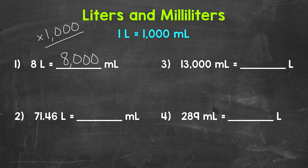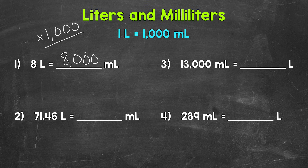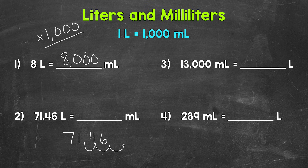When we multiply something by 1,000, we can make this really simple. All we need to do is move the decimal three times to the right. When we multiply something by 1,000, each digit of that number shifts three places to the left — the value increases by 1,000, meaning we multiplied by 1,000. So let's move the decimal to push all our digits to the correct place. Move the decimal three times to the right when we multiply by 1,000. Let's rewrite 71 and 46 hundredths and move the decimal once, twice, and three times to the right.